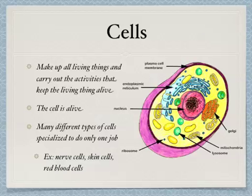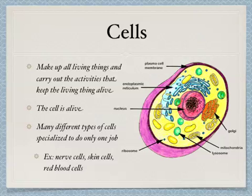We're going to start this lesson by reviewing a little bit about cells. Cells make up all living things and carry out the activities that keep that living thing alive. Remember that the cell itself is alive. There are many different types of cells specialized to do only one job. Some examples include nerve cells, skin cells, and red blood cells. Can you think of any others?